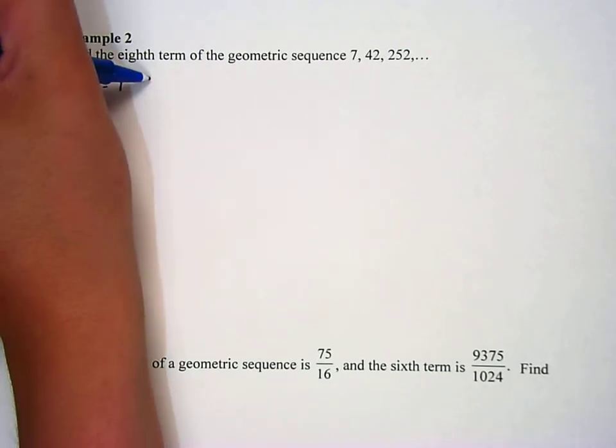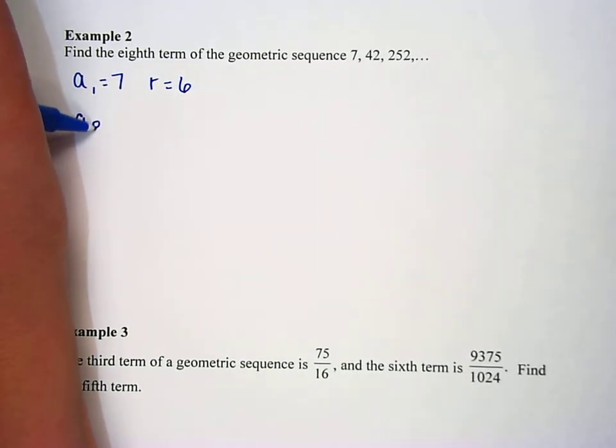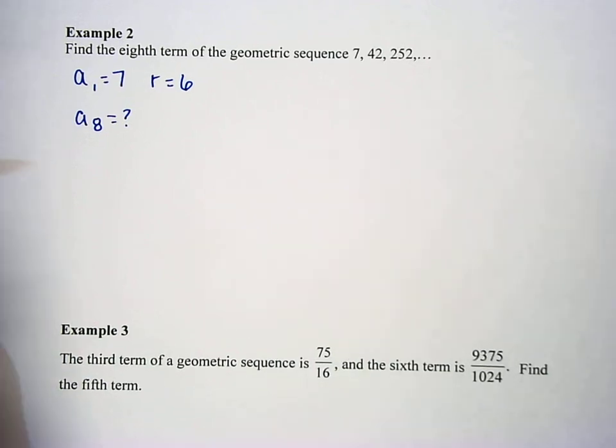What's the common ratio? What do we multiply by to get the next term? 6. So 7 times 6 is 42, so the common ratio is 6. And we want to find a sub 8, so put a sub 8 equals question mark. That's what we're trying to figure out.